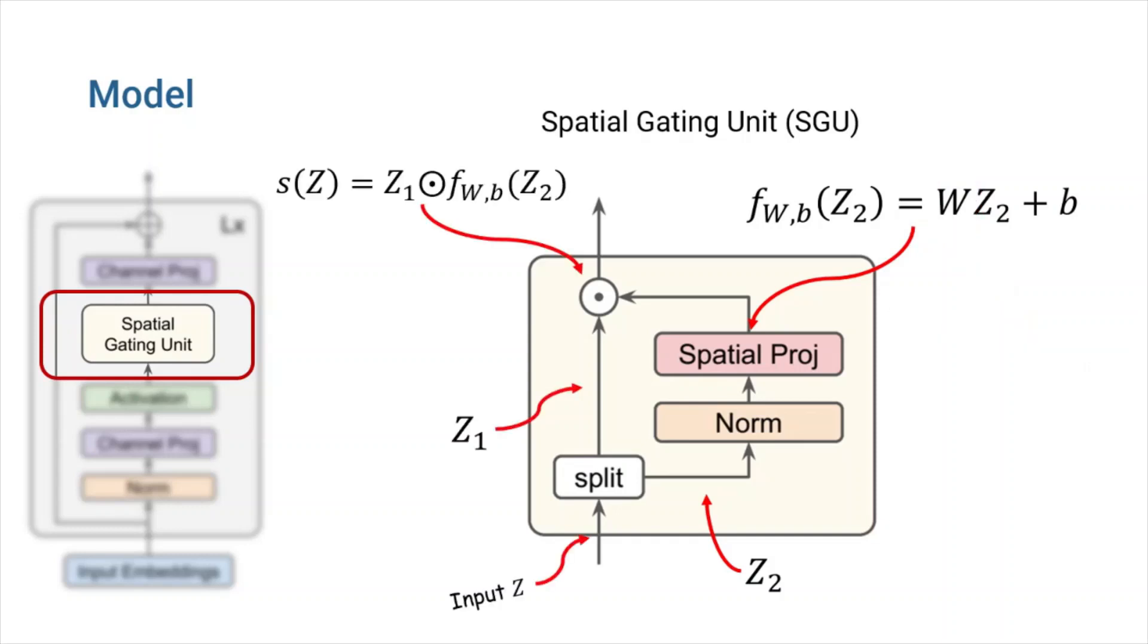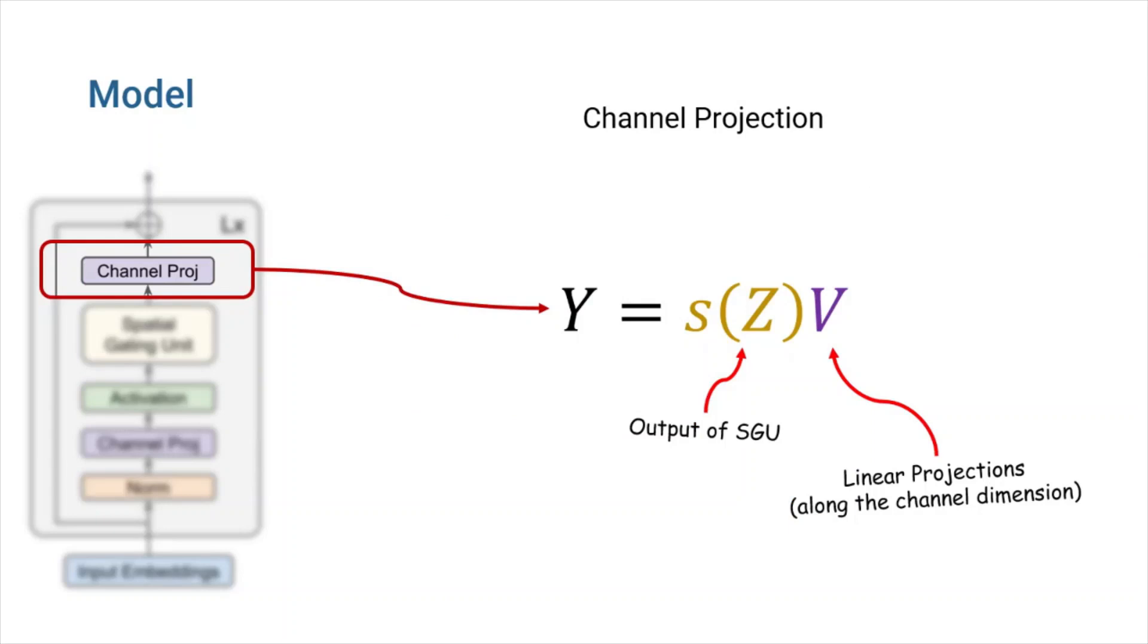In the end, we calculate element-wise multiplication of Z1 and the modified Z2. Finally, the outputs of SGU go through another linear projection along the channel axis.